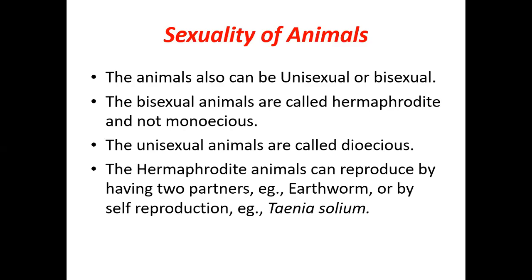Hermaphrodite animals have both male and female parts, but they can still self-reproduce or find a partner. In the earthworm, the female part matures earlier and the male part matures later. Therefore, when an earthworm first mates, sperms are deposited, then it lays eggs; the next time it mates, it fertilizes those eggs.